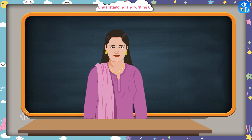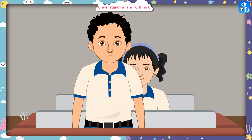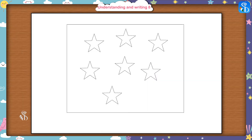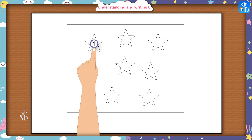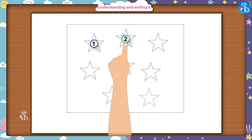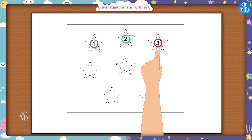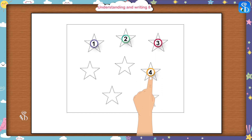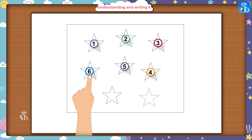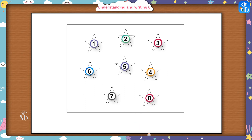Who will draw the next picture? Madam, I will. Okay, then you have to draw 8 stars in this square. 1, 2, 3, 4, 5, 6, 7, 8. Good job, Raju.